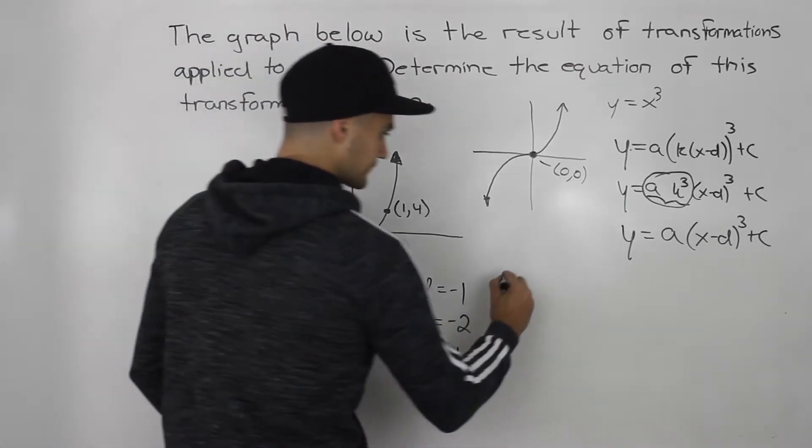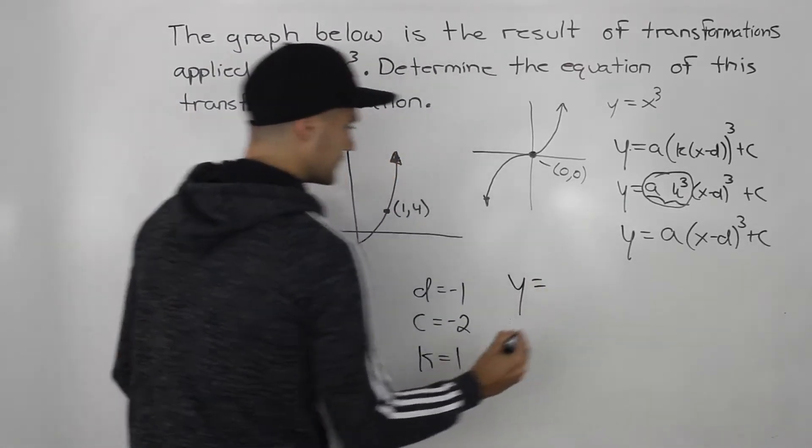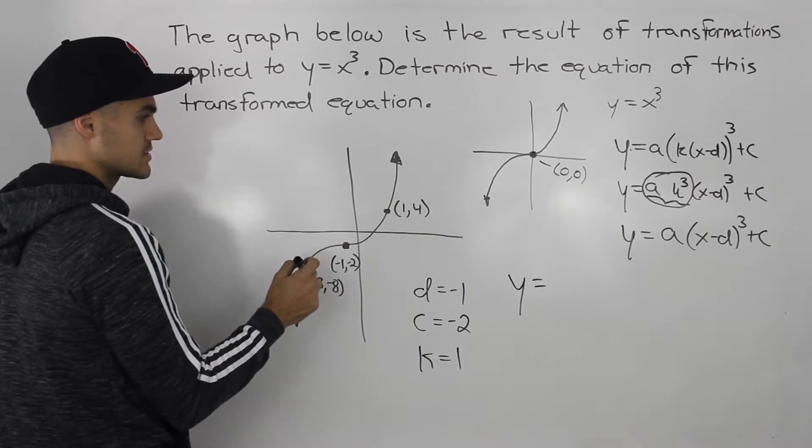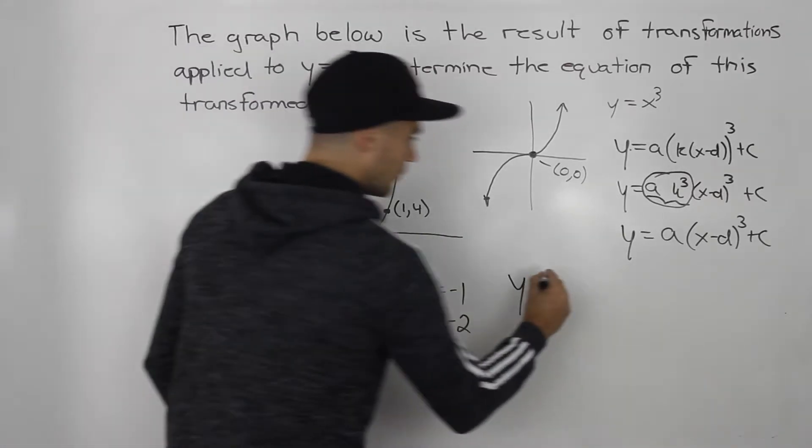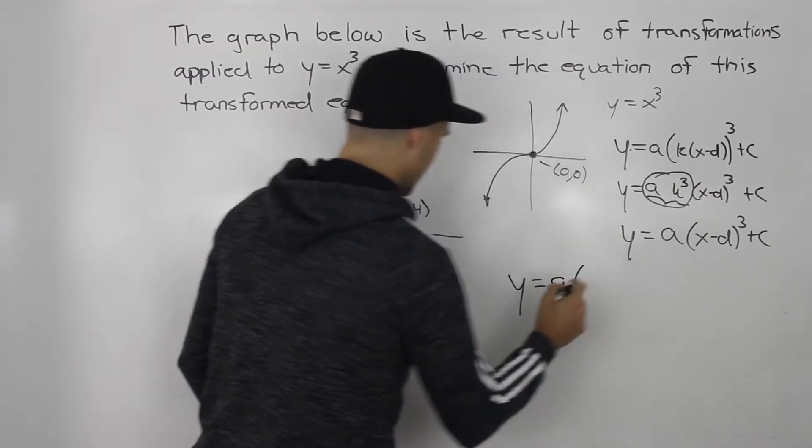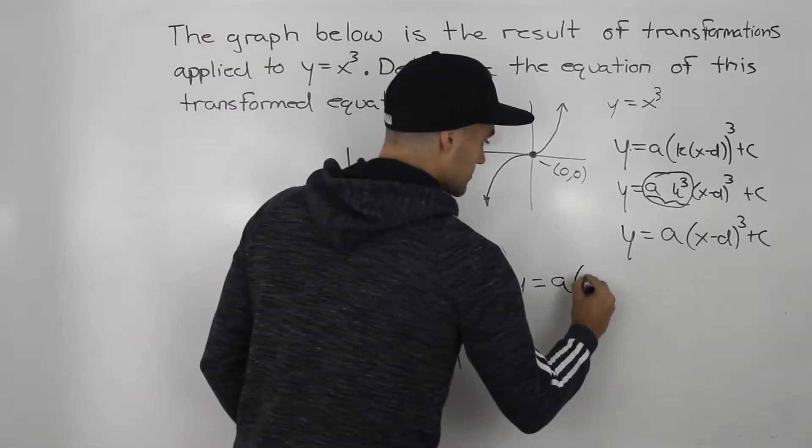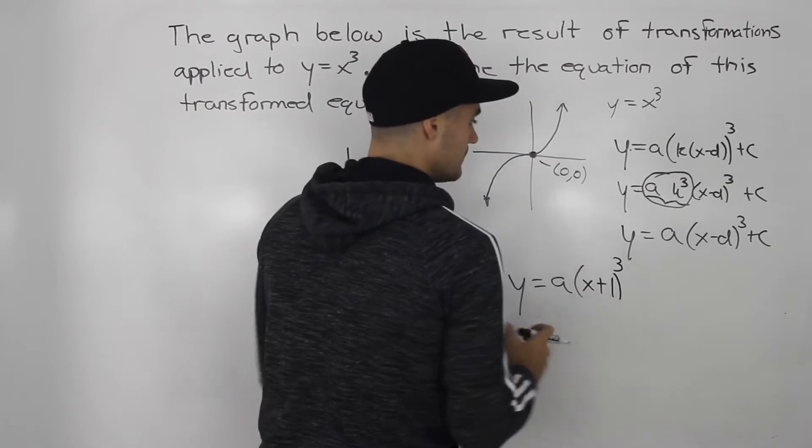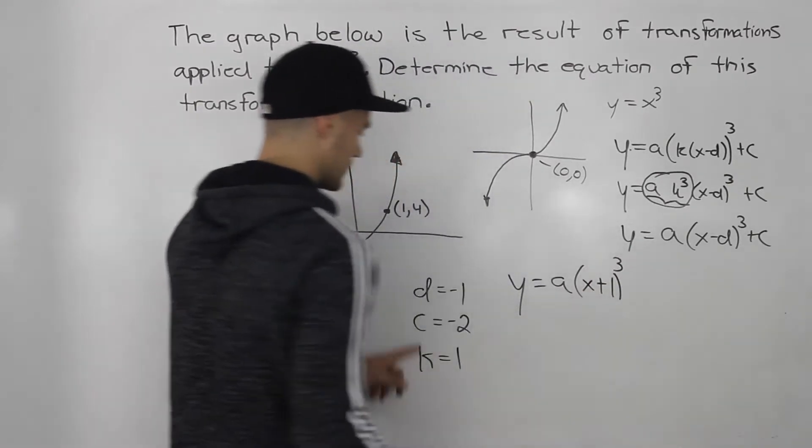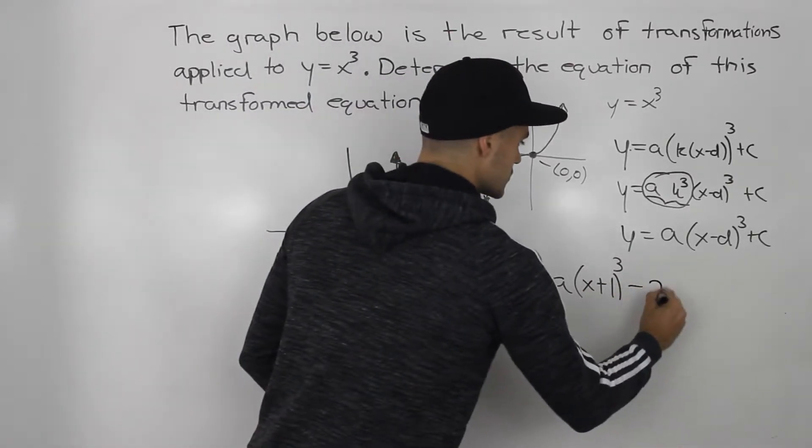Okay, so now that we know that, let's go back to this question. So let's fill in what we know. So we got a and then our d value is negative 1. So x minus negative 1 would be x plus 1 to the power of 3. And then the c value is negative 2.